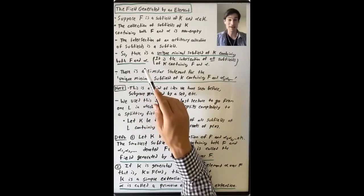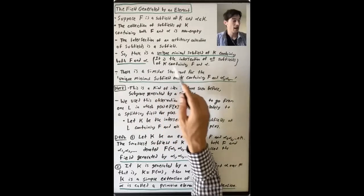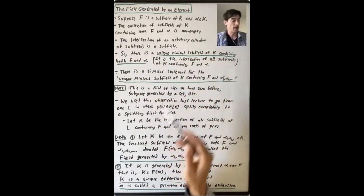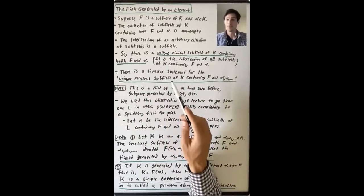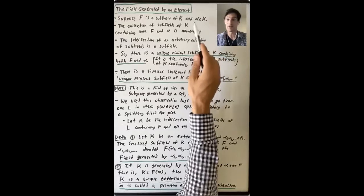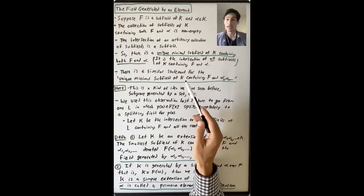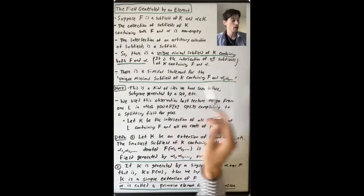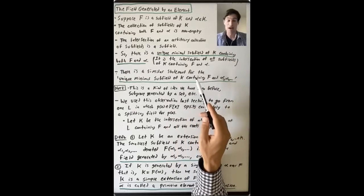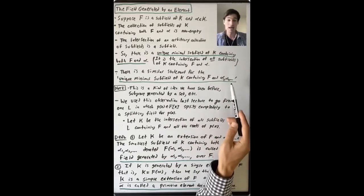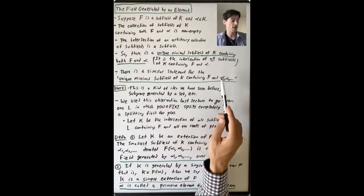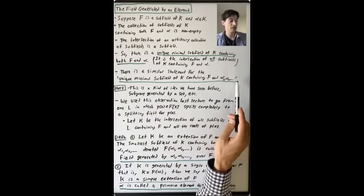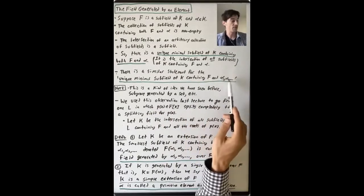You take all of the subfields of K that contain both F and alpha, and you take their intersection. This is going to be an important object — the unique minimal subfield of K containing both F and alpha. And if instead of having one element alpha in K, you have two elements alpha-1 and alpha-2 in K, you can do the same thing. Or you could take an arbitrary collection of elements — finitely many alpha-1 through alpha-n, or infinitely many. You just take the intersection of all subfields of K containing F and your collection of elements.